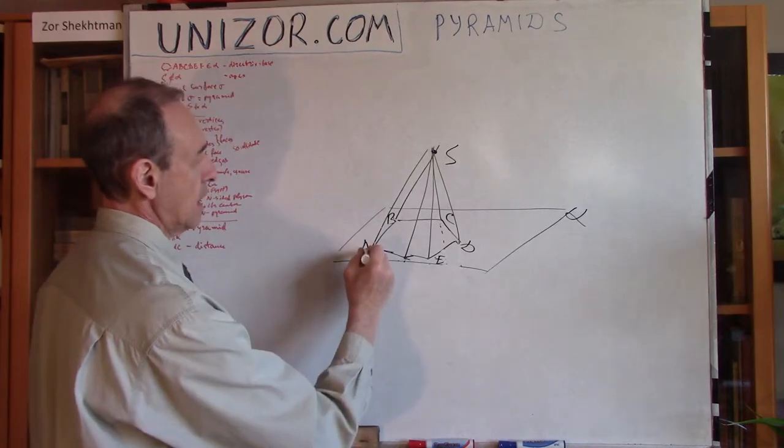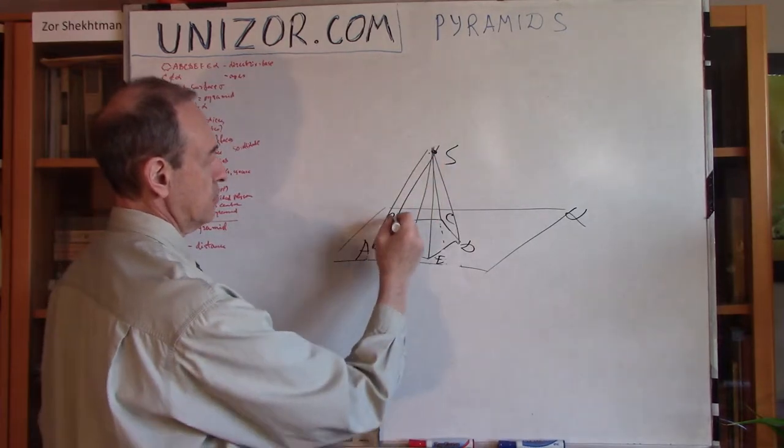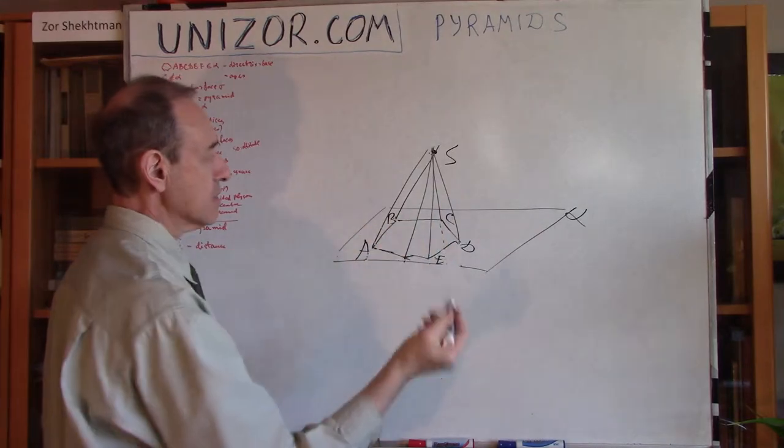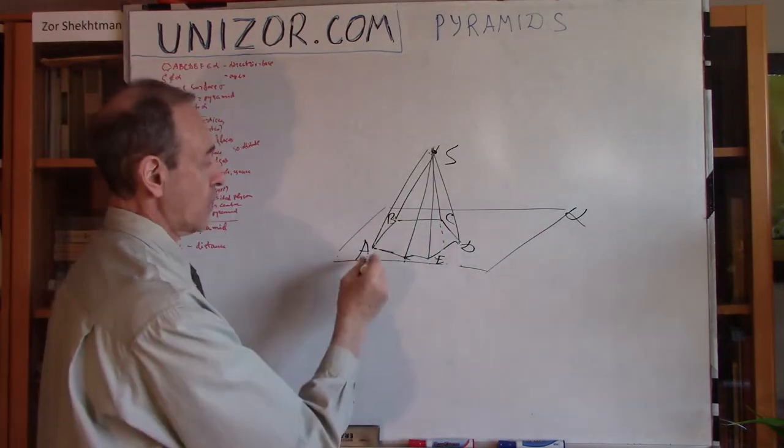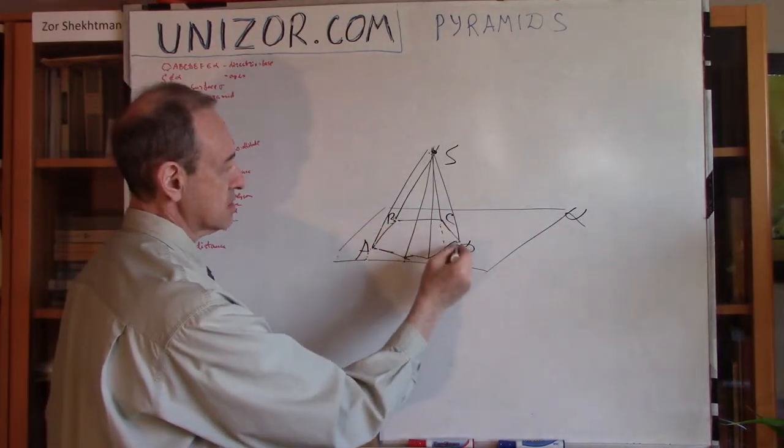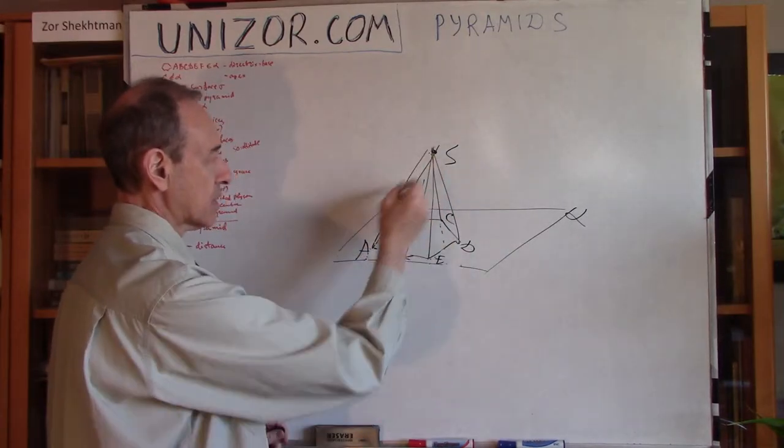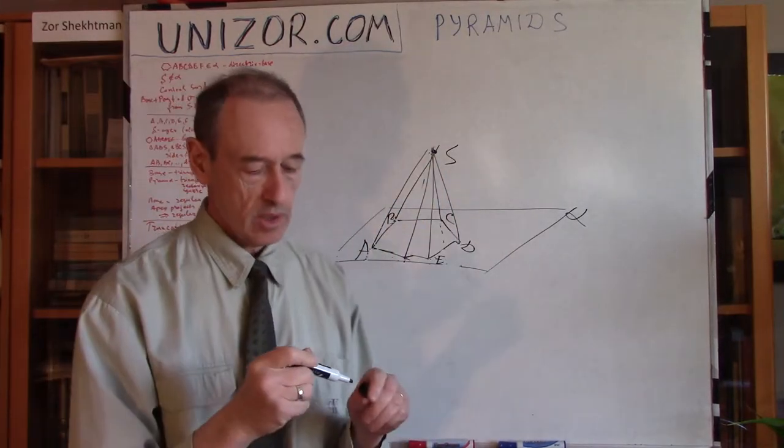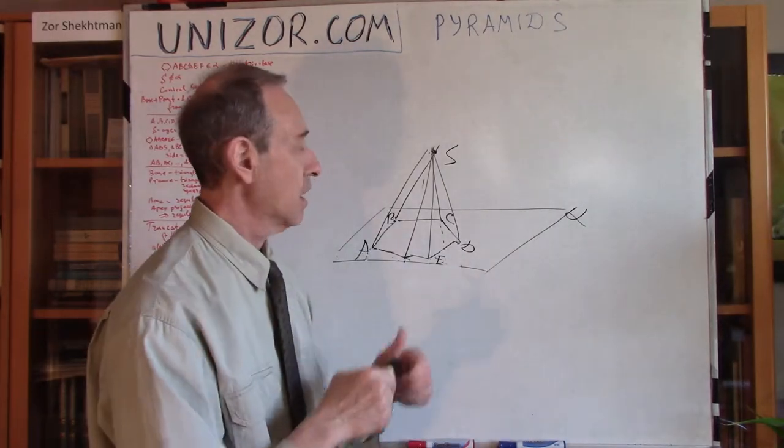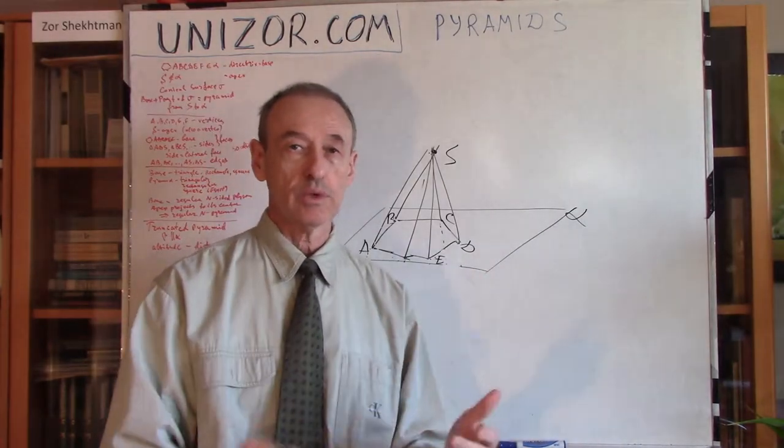The A, S, B, S, C, S, D, S, etc. These are edges as well as A, B, B, C, C, D, D, E, etc. So, all these segments which connect the points, vertices of the pyramid, including apex, all these segments are called edges.